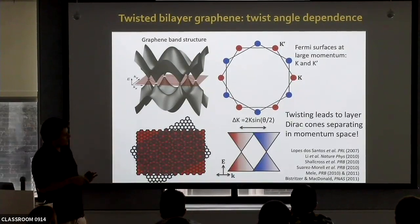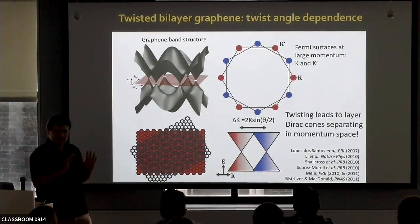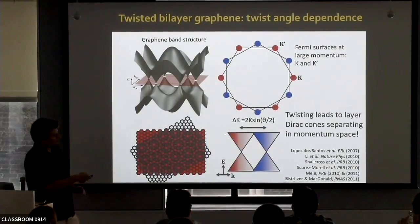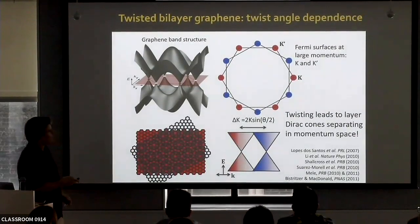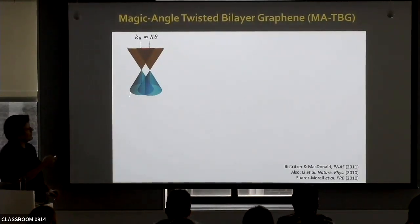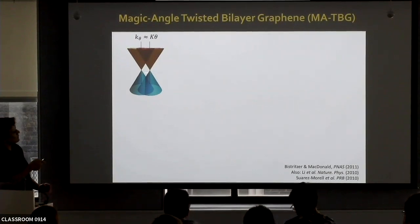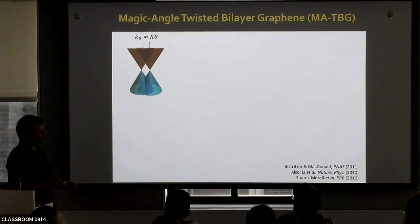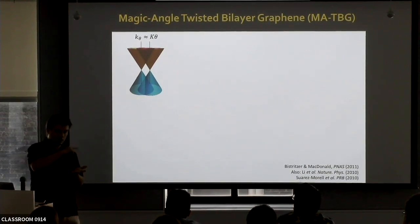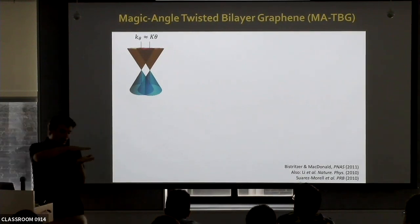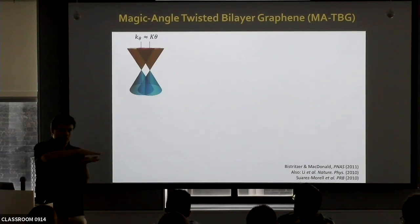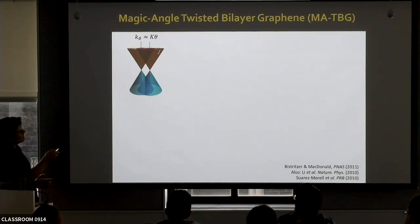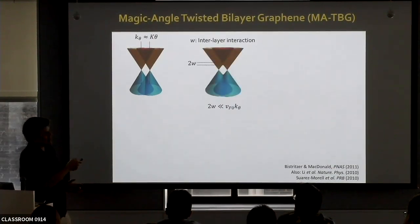This twisting leads to layer Dirac cones which separate in momentum space. Starting from a small but finite twist angle, the Dirac cones are separated. But these two sheets are just three angstroms apart, so electrons are very aware that the other graphene sheet exists and can tunnel between the sheets. This interlayer tunneling W opens a band gap at the crossing point between the dispersions — this is the same thing as bonding and antibonding energy states in a hydrogen molecule, but for two graphene sheets.